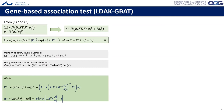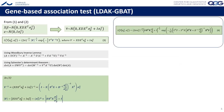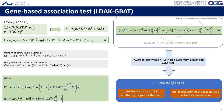From equations one and two, we define the likelihood equation (equation 3). Using the Woodbury matrix identity and Sylvester's determinant theorem, we can rewrite the inverse of the variance and the determinant of the variance. This gives the final form of the equation (equation 4), which allows efficient computation.